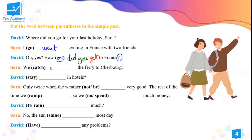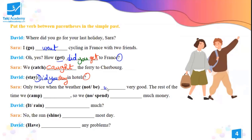We caught the ferry. How do I spell 'caught'? C-A-U-G-H-T. Did you stay in a hotel? Only twice, when the weather wasn't very good. The rest of the time we camped. We didn't spend much money. We did not spend — we didn't spend.